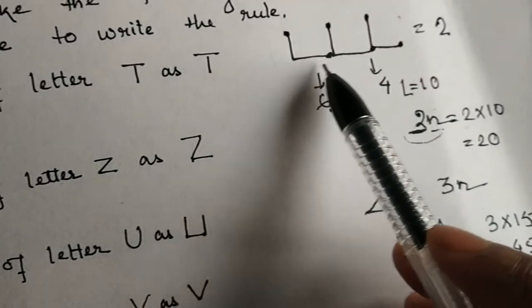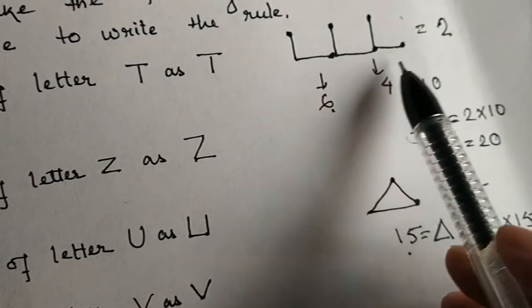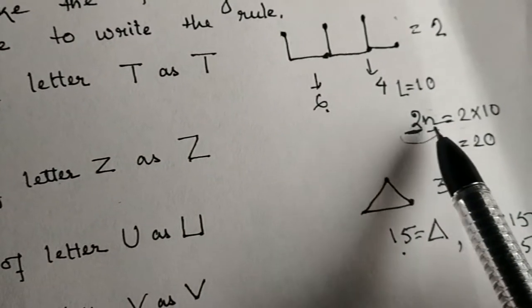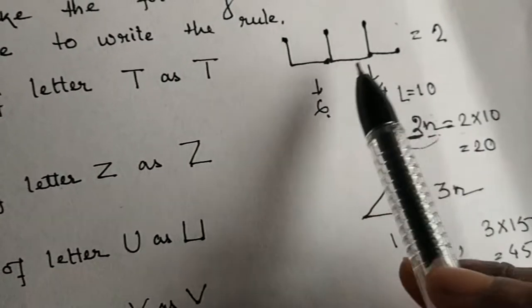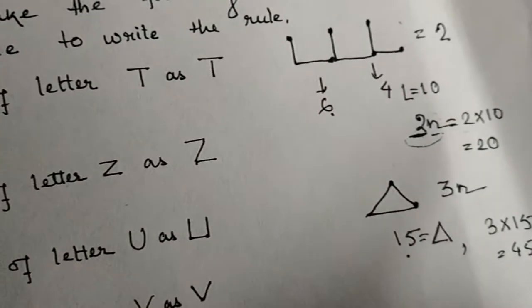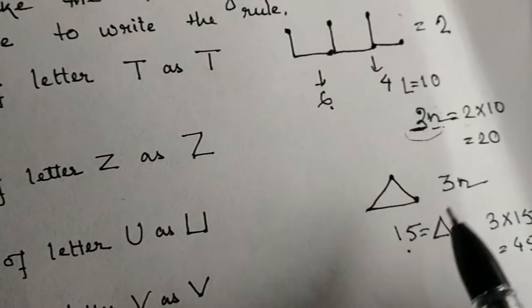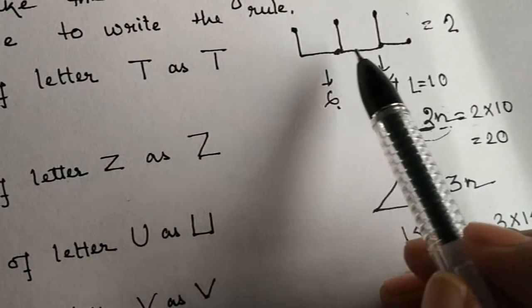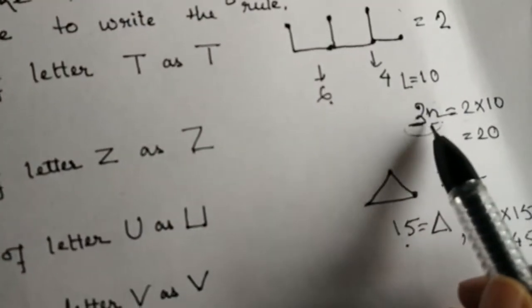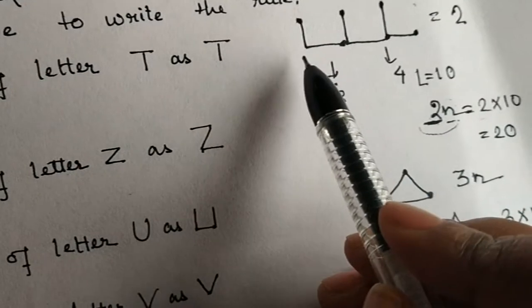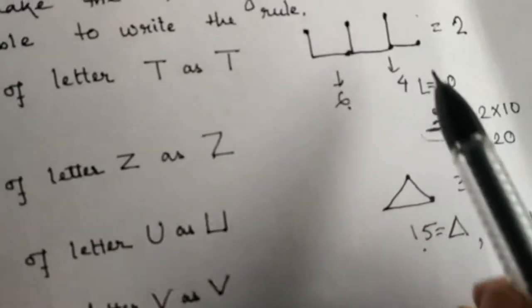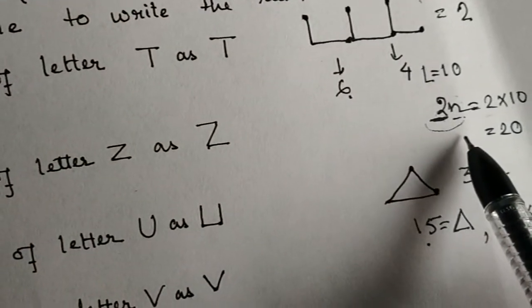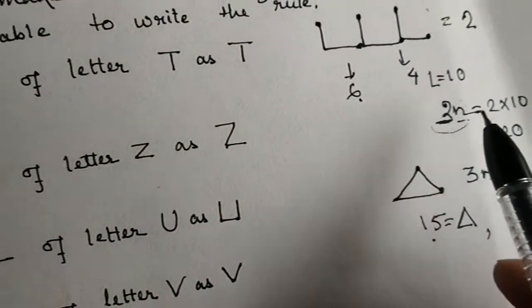For example, if there are 3 L's, then 3 into 3 equals 9. If there are 3 L's, then 3 into 2. If there are 5 L's, then 5 into 2.